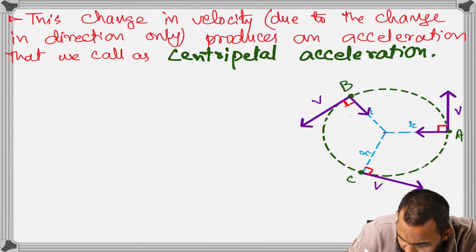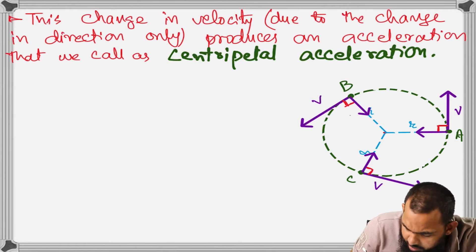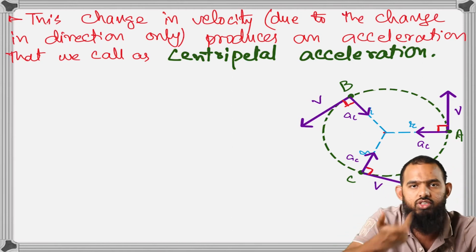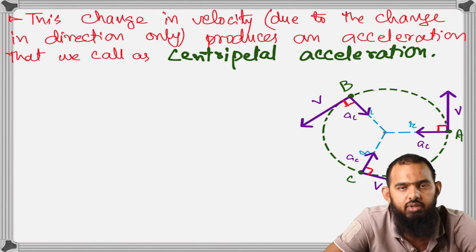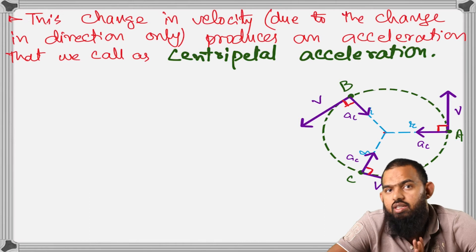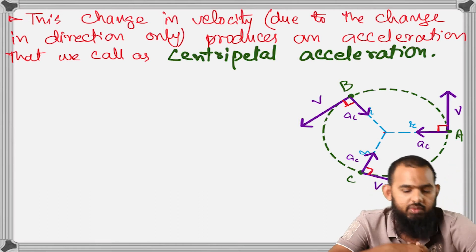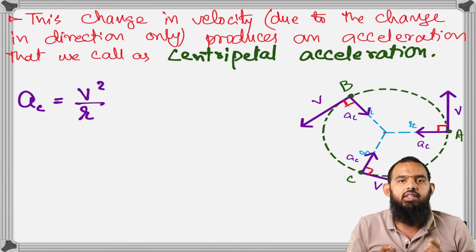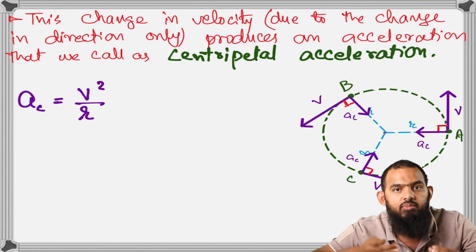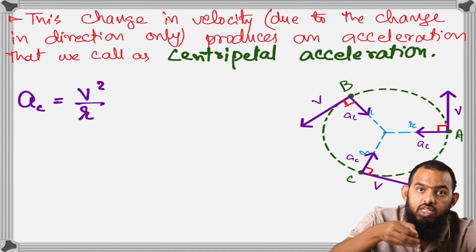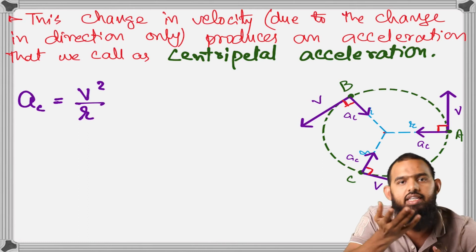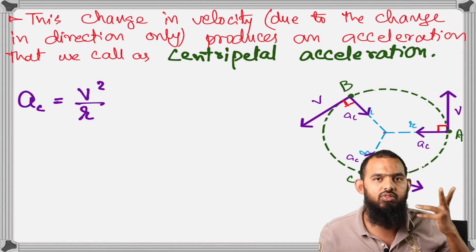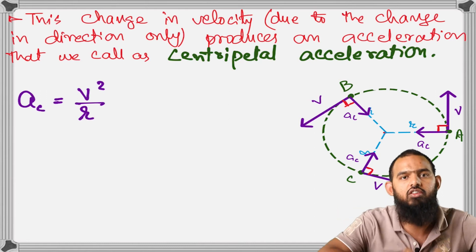We will discuss further why centripetal acceleration acts towards the center — it is because the centripetal force acts towards the center. Now, to calculate this centripetal acceleration, we use the equation: ac = v²/r. You just need to know the speed v of the object and the radius r of the circular path, and the centripetal acceleration is ready.